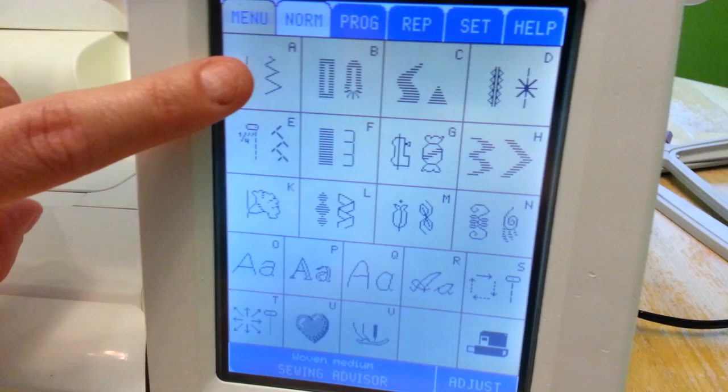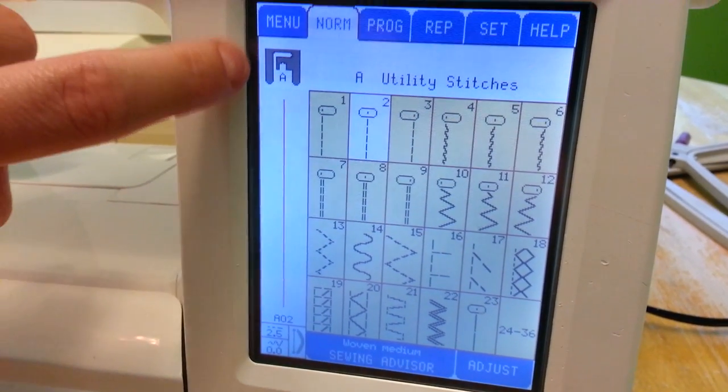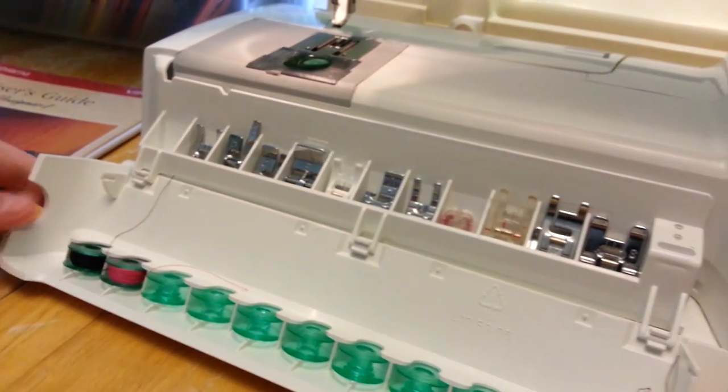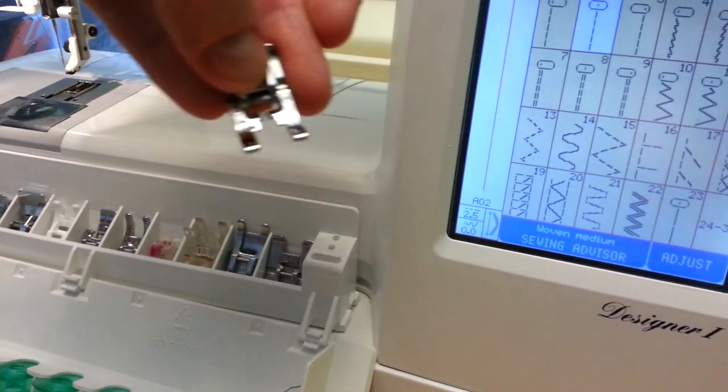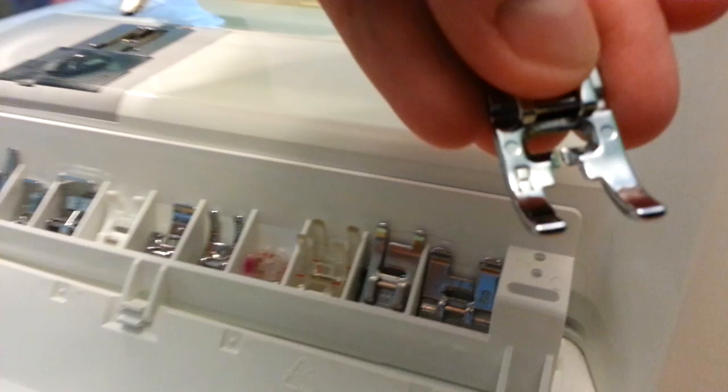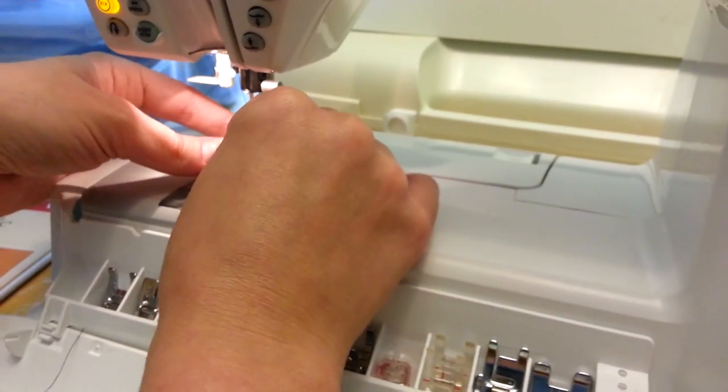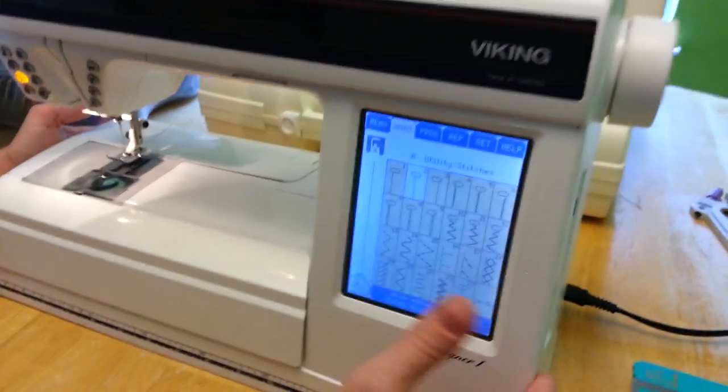I'm going to select our stitch, and up here it tells us which foot to use. It has an A on it. All of them are in here along with the bobbins, and they have the letters on the foot. It's kind of hard to tell, but that's an A, so we're going to slide it on there very easy. And you're done, and you're ready to go.